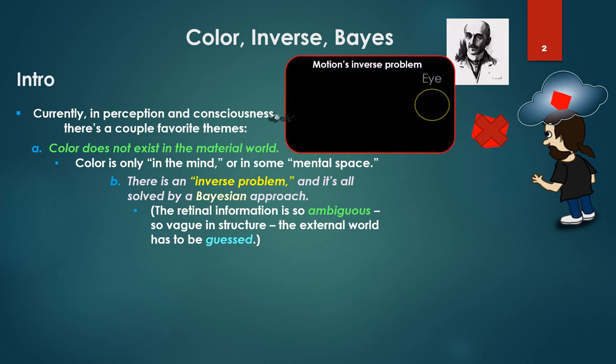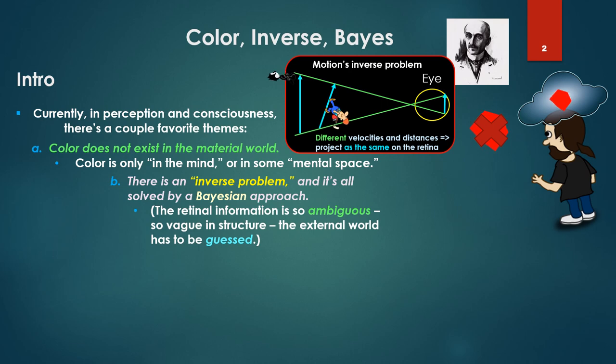An example, the inverse problem with respect to motion. Felix is walking in there. As Felix's path projects on the eye, it would project as such at the back of the retina. However, a different length, different velocity would project exactly the same, or yet another one. So different velocities and distances project as the same as the retina. So how do we disambiguate what the actual velocity and distances are?